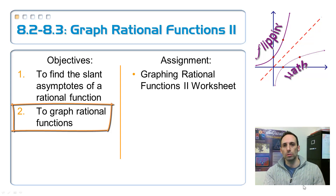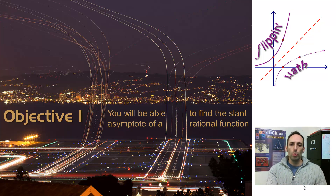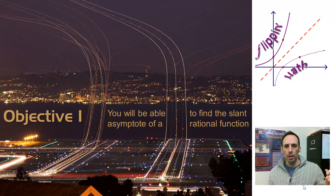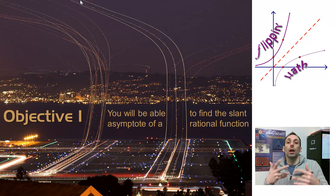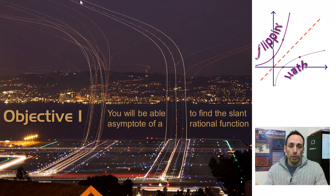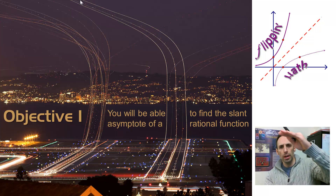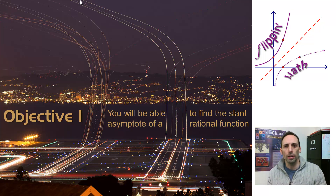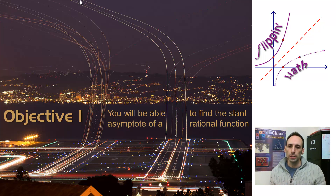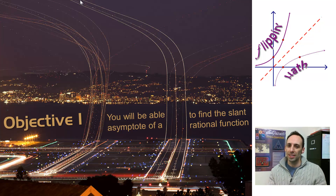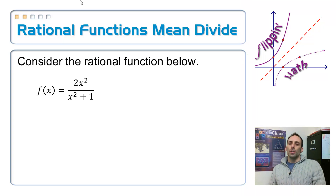Objective one: you will be able to find the slant asymptote of a rational function. If you look at the picture, this is a time-lapse photo of airplanes taking off at night - those are the running lights - and it looks as if they're approaching some sort of slanted line. That's what a slant asymptote is going to look like. In a real situation, a plane taking off wouldn't continue on that slant forever - you'd end up in outer space. In real life it levels off and eventually lands. Notice the title on this: rational functions mean divide.